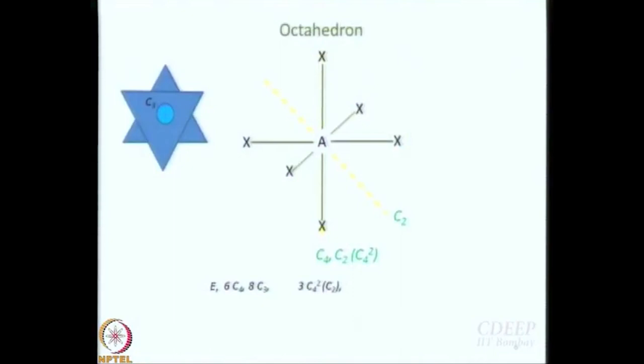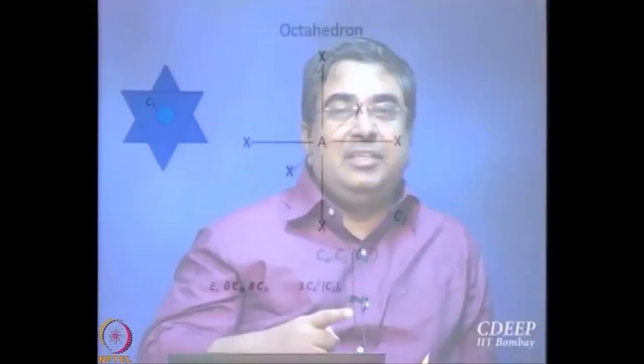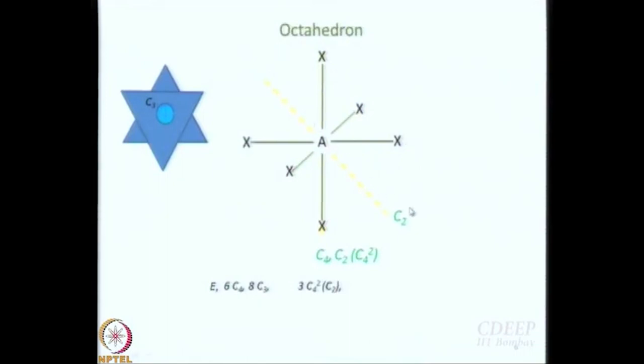Next is C2. You already have one kind of C2 which arises from C4 operated twice in succession. There is another kind of C2 which is 45 degrees with respect to this, bisecting the bond angle — a second kind of C2, a different class. How many such C2s will there be? In each plane you have 2, and considering the planes xy, yz, zx, that gives 6 C2s.